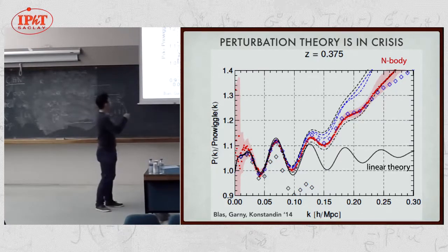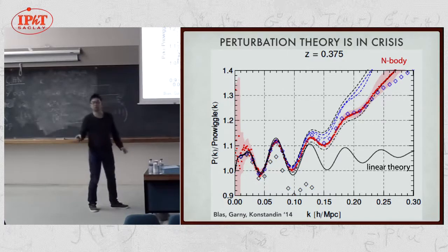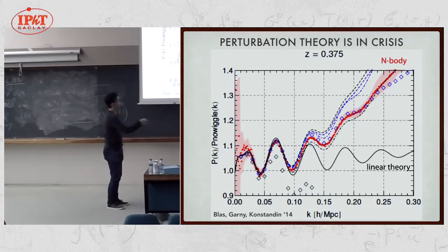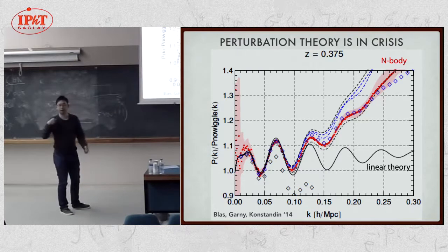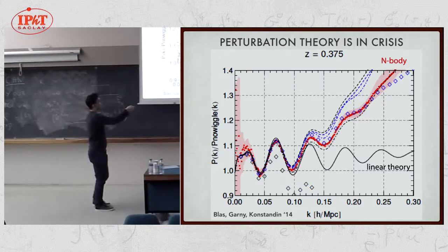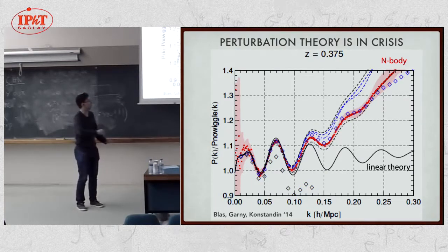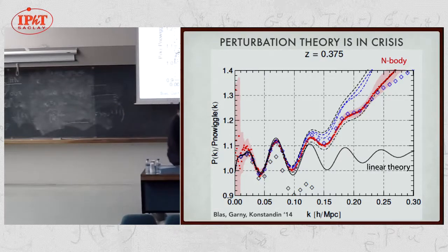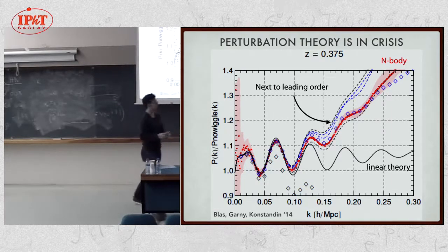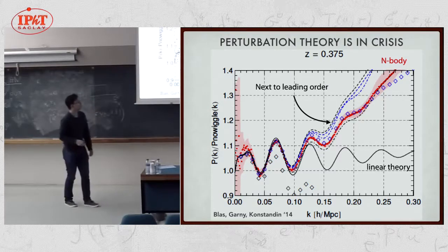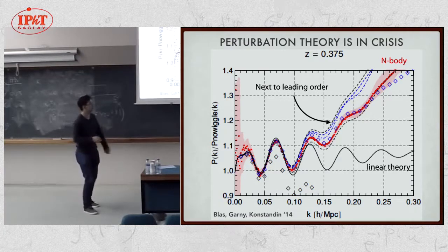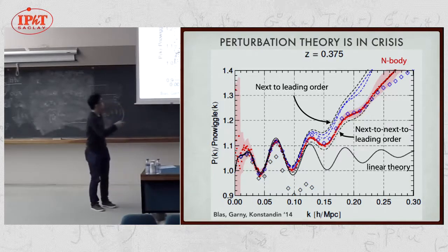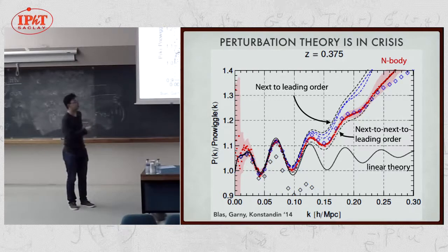This is a nonlinear power spectrum normalized by some smooth component as a function of wave number k. Redshift is around 0.4. This is the linear theory prediction. If you run simulations, what you get is these red data points with error bars shown by the shadow. You want to fill the gap between this and that. Naively, you can go to the next order, which is one loop calculation. You are going in the right direction, at least. Then, next-to-next-to-leading order, two loop order, is this dot dashed line. Then you are getting even closer. Very good.